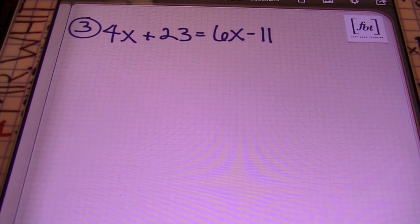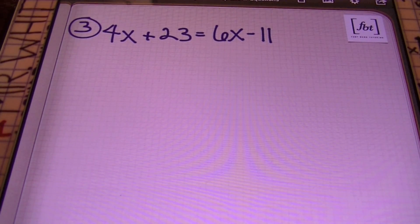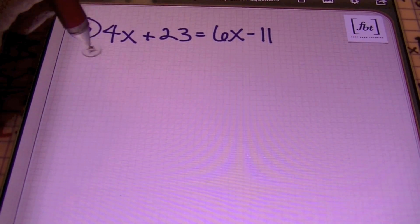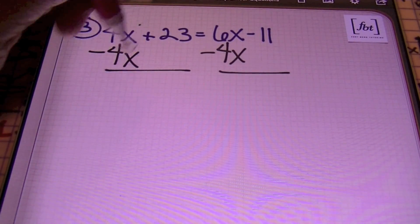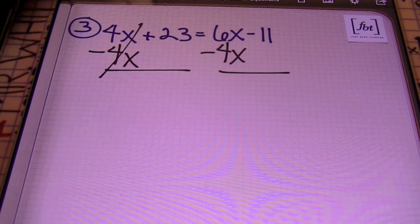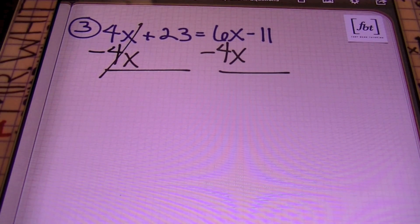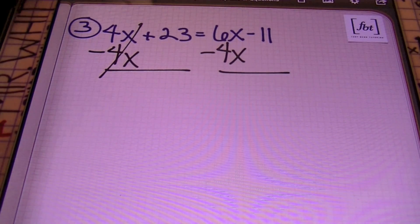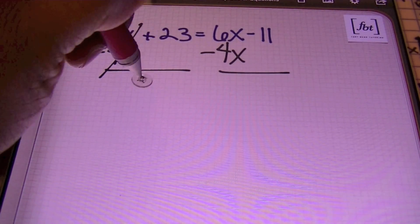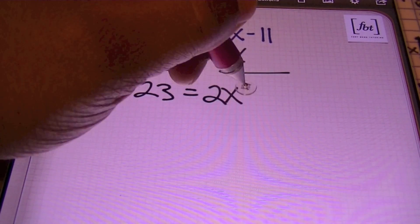In example 3, we have 4X plus 23 equals to 6X minus 11. I'm going to start by subtracting 4X from both sides — on the left side and on the right side. This time I'll end up with my variable on the right-hand side of the equation because I prefer a positive coefficient. I bring down 23, which equals to 2X minus 11.